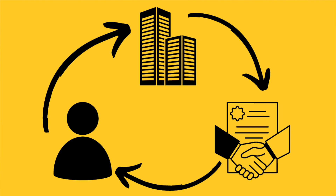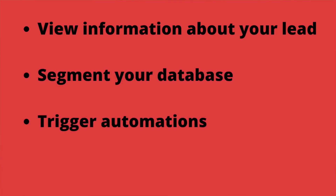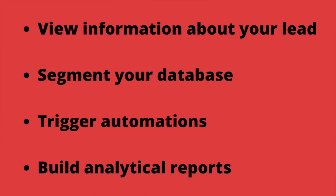This interdependence between all these objects gives you a great freedom of action and a clear understanding of your database at any point in time. Now that you understand that HubSpot classifies data into different objects, we need to understand that those objects get populated by what we call properties — information about these different objects that we can use to view information about your leads, segment your database, trigger automations, or build analytical reports.